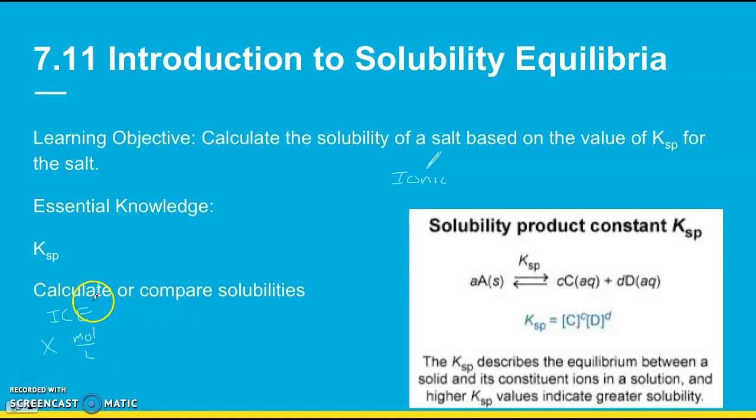Or if you don't have to do a calculation, if you just simply have to compare different ionic salts and say which one is more soluble, you just look at their KSP. And a larger KSP means that the products are more favored, so the solid will be separated into ions more. So a larger KSP means that that ionic salt is more soluble.